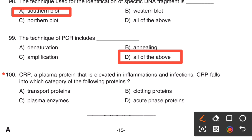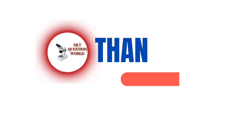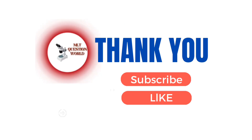Question number 100. CRP is a plasma protein that is elevated in inflammations and infections. CRP falls into which category? Option A, Transport protein. Option B, Clotting protein. Option C, Plasma enzymes. Option D, Acute phase proteins. The right answer is Option D, Acute phase proteins. Here we are winding up. If you want a syllabus-wise preparation for the MLT examination, please comment below. Thank you.